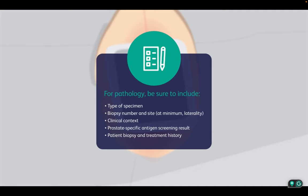When liaising with a pathologist regarding the prostate biopsy, remember to relay the type of specimen, biopsy number and site, clinical context, and the patient's prostate-specific antigen screening result, and biopsy and treatment history.